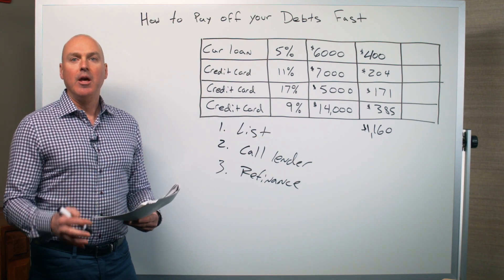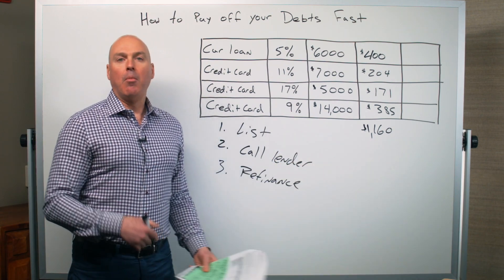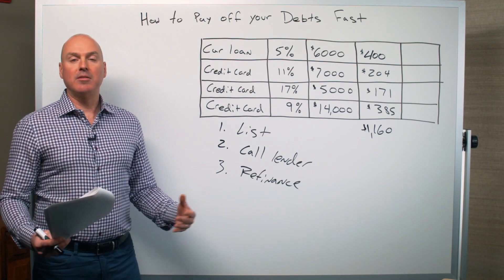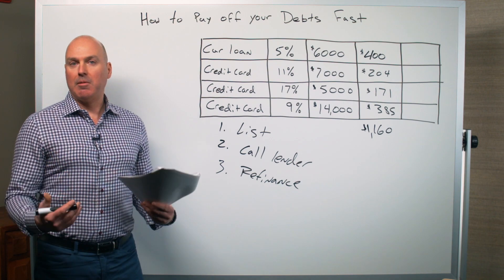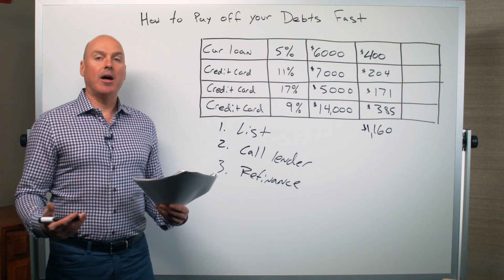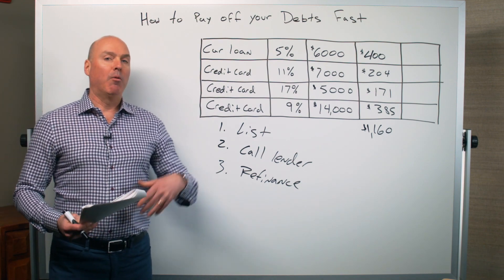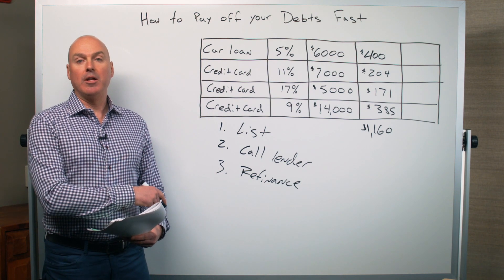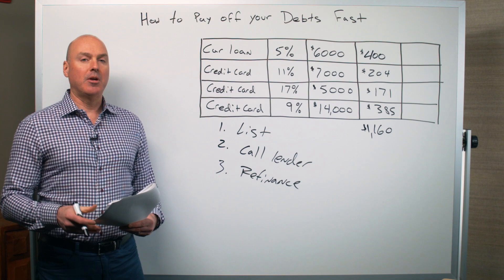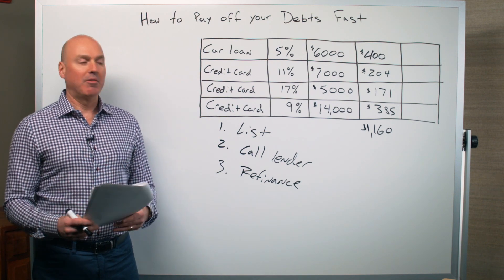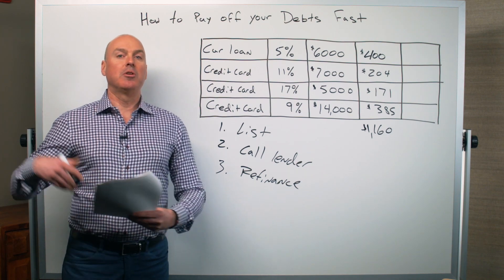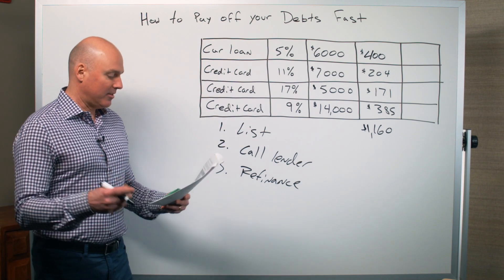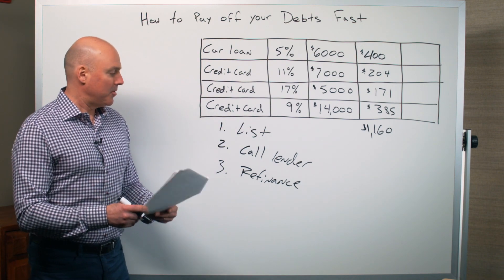We also want to talk about allocating more than the minimum. Hopefully if you go through your budget, you can find ways to cut some expenses and bump those payments up from $1,160 to maybe $1,500 a month or more if you want to get more aggressive. We've got other videos on our YouTube channel with money-saving tips and strategies, and I'm working on new videos to help you 'find the money' — reduce expenses so you can pay debts off faster and have more money to save for retirement or take the vacation you want.